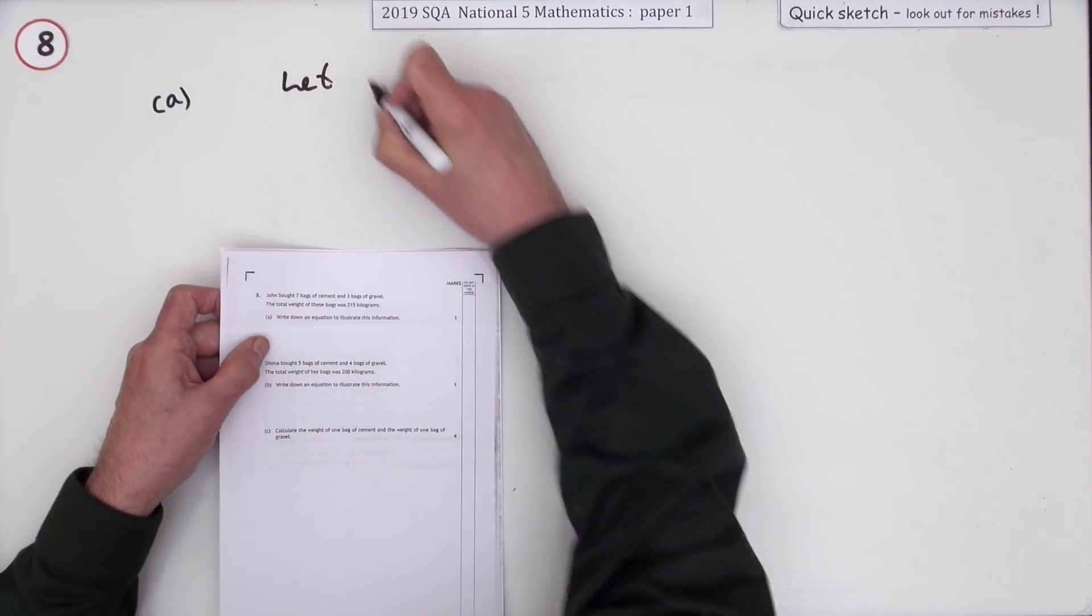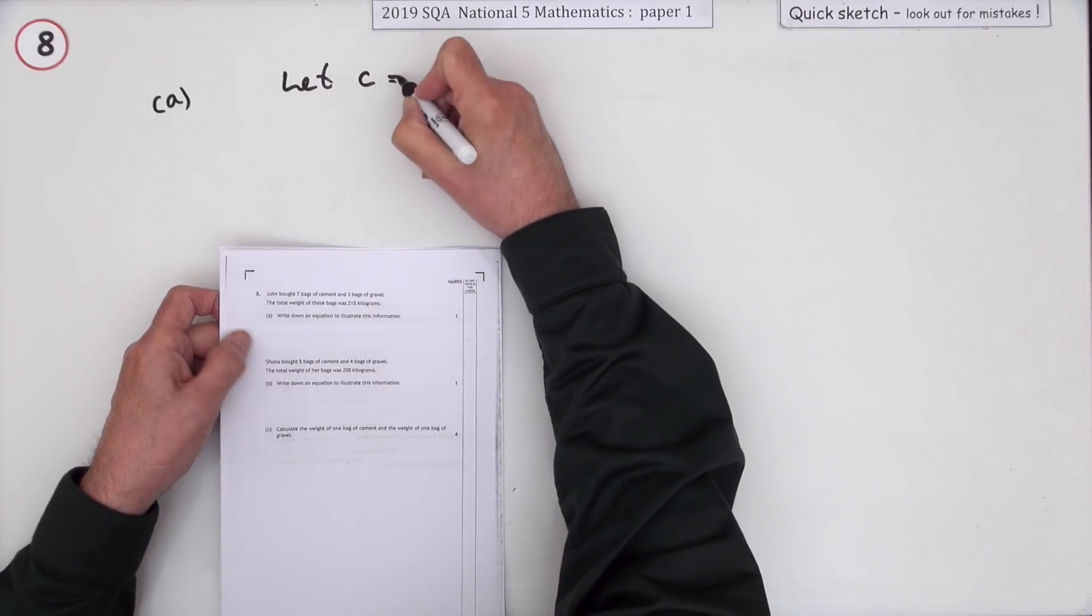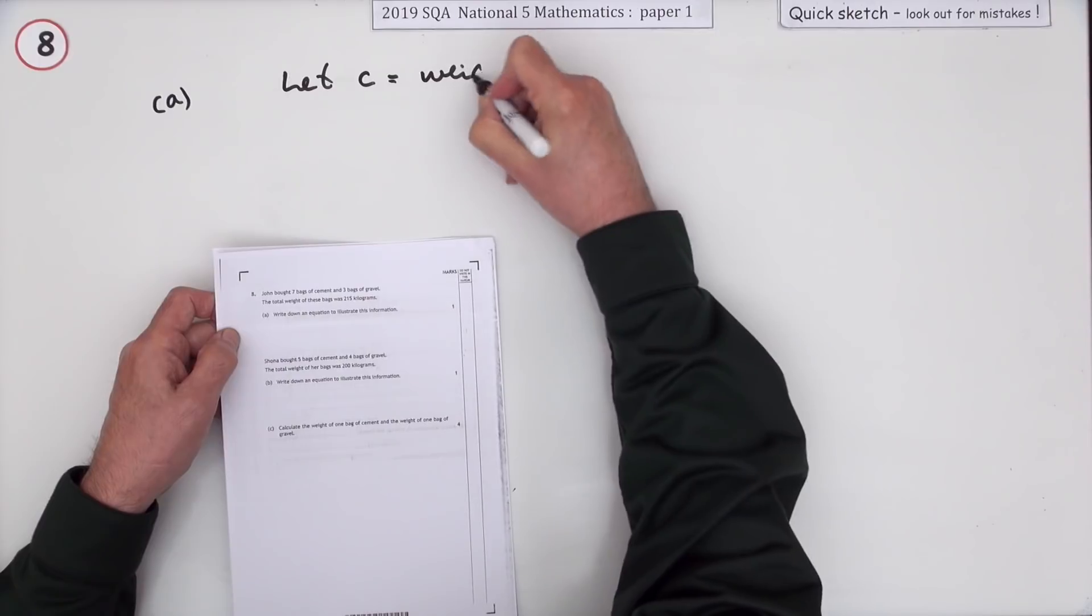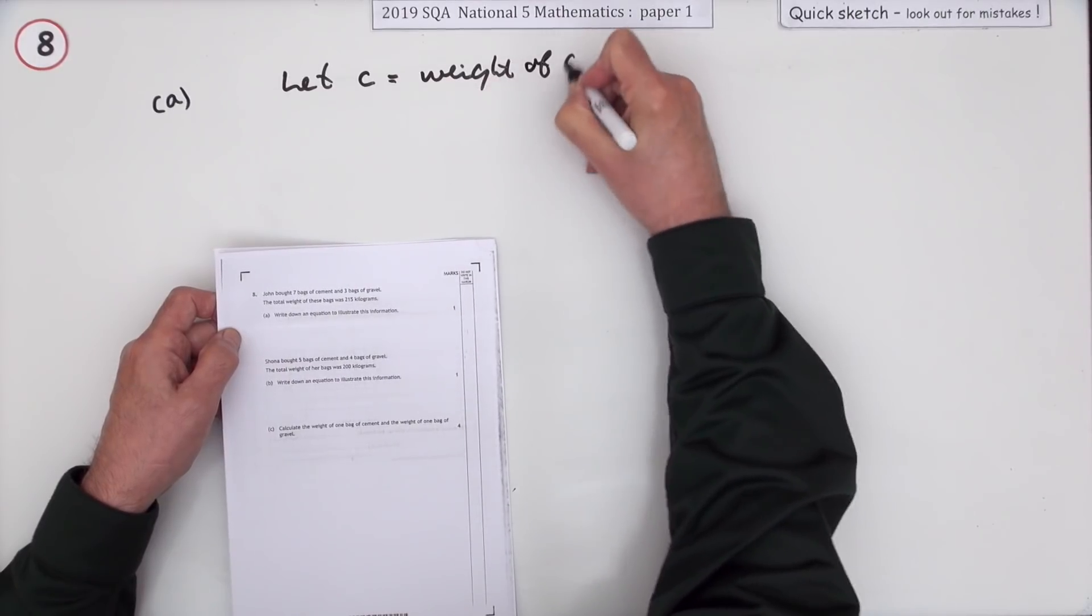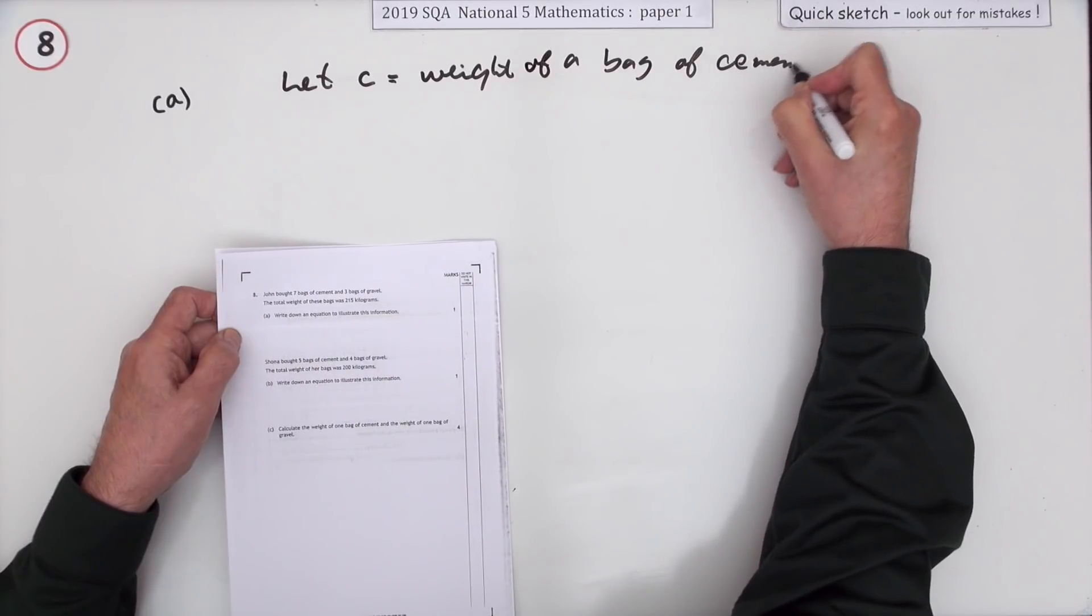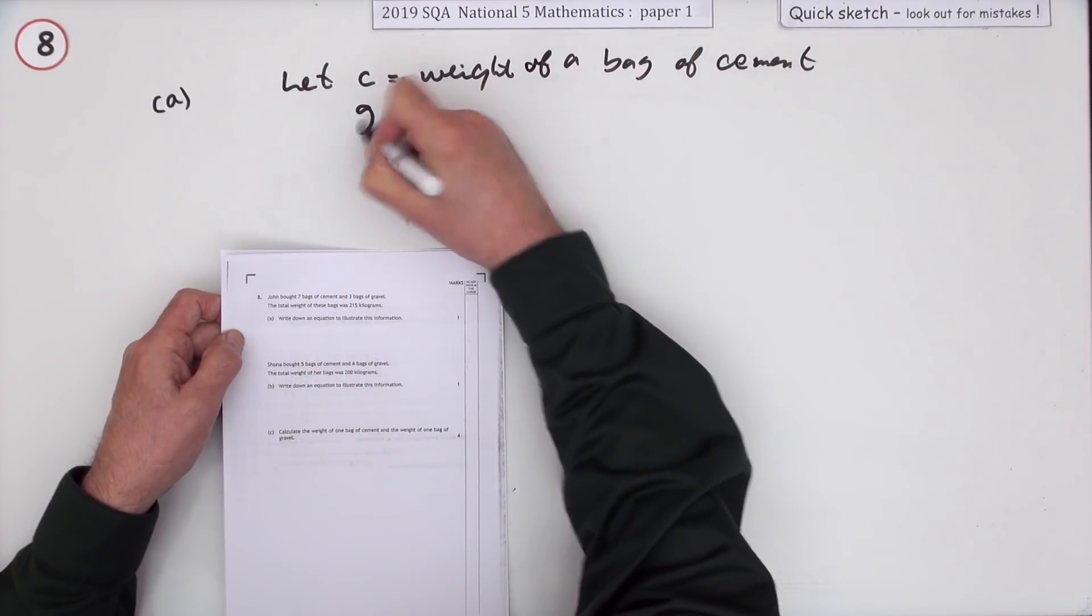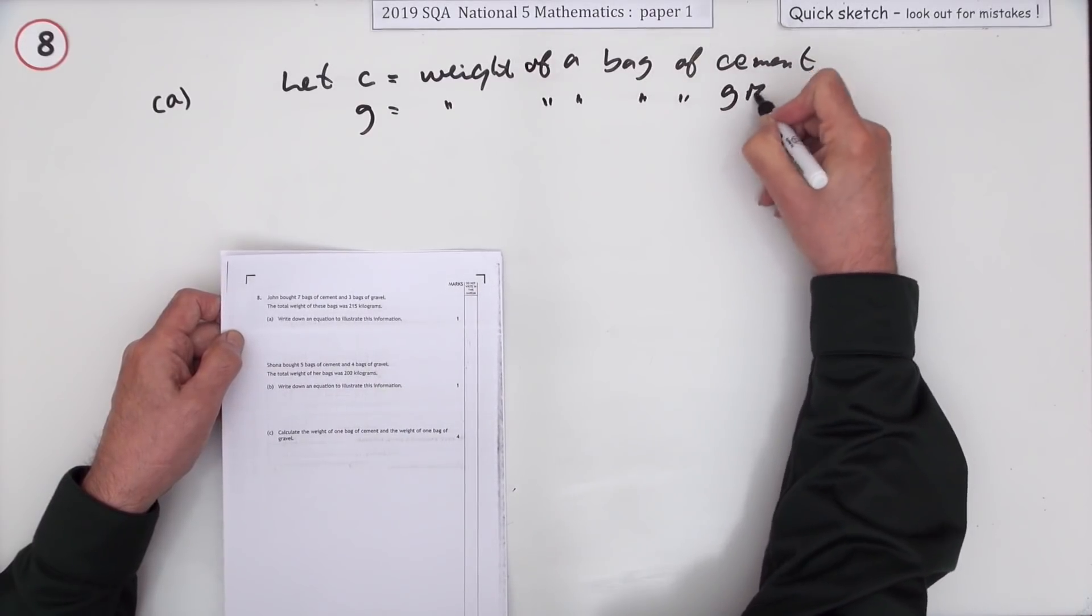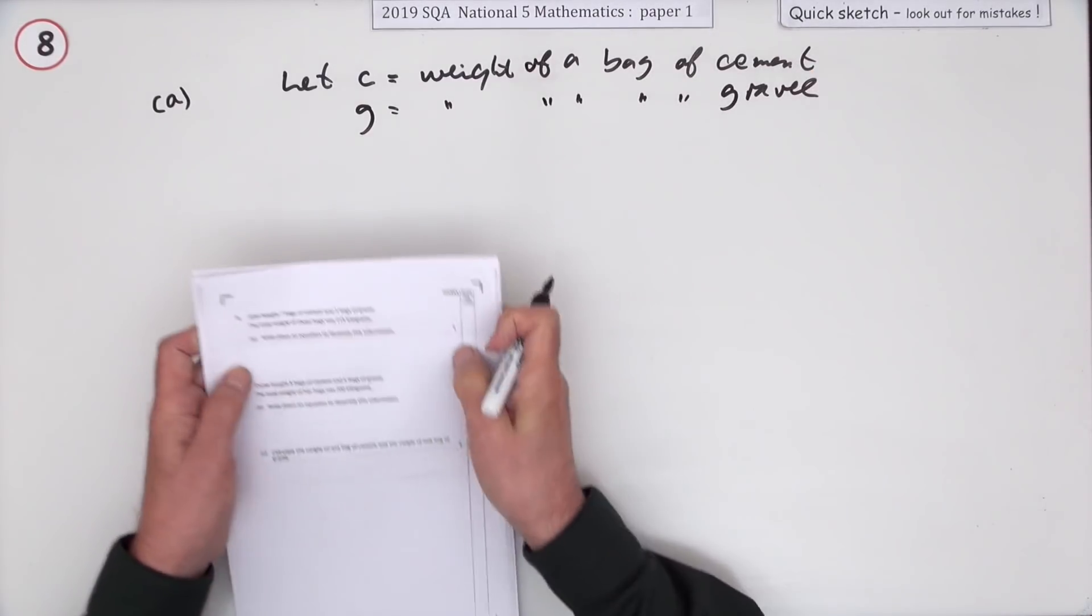Write down an equation. I should really say something like this first of all: let C equal - and it's all about finding weights - so really it's the weight of a bag of cement, and G be the weight of a bag of gravel.